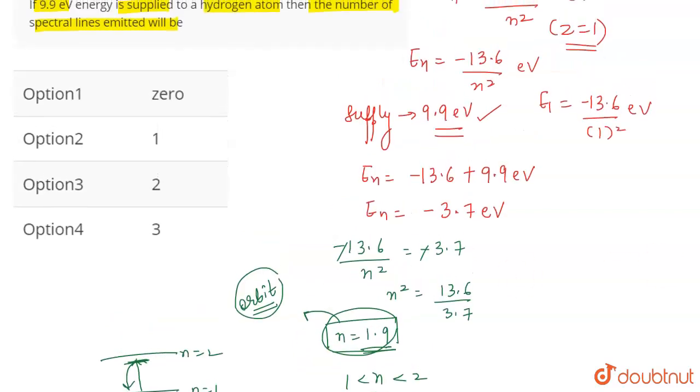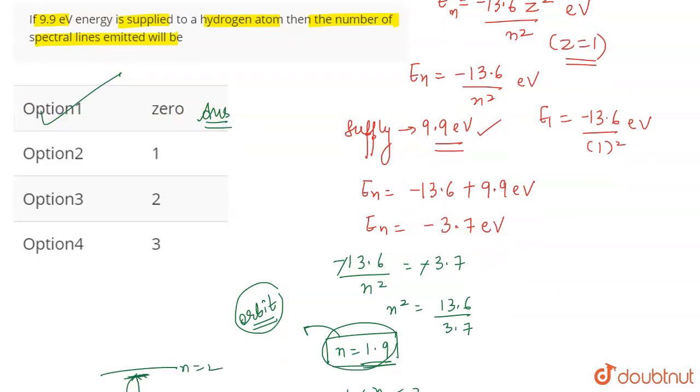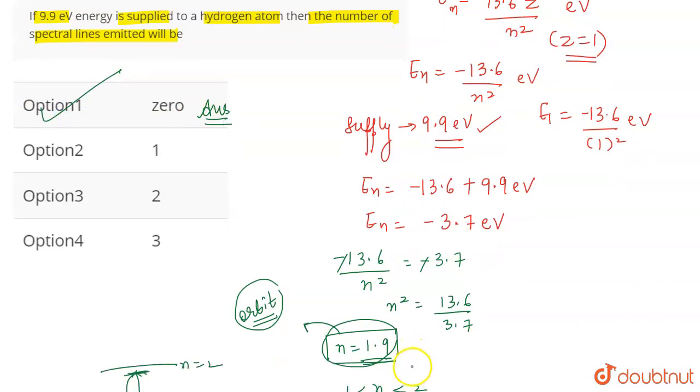If no excitation has taken place, it means that there has to be, or there will be, no spectral lines. So therefore, the correct answer for this question is going to be zero.